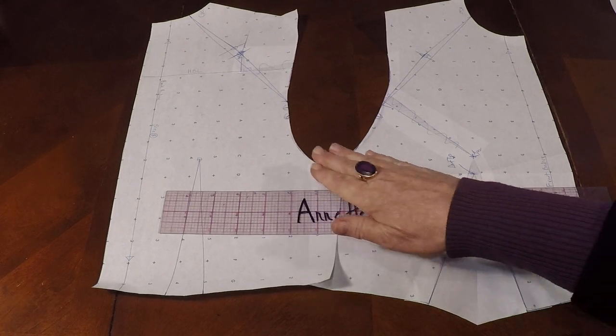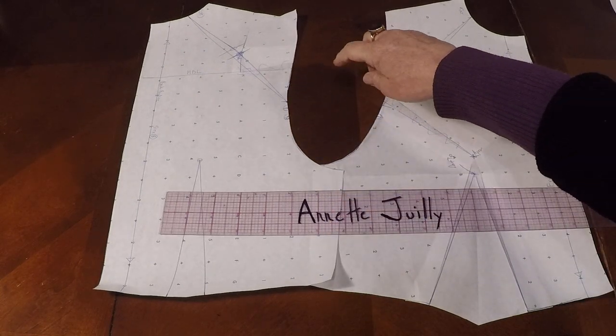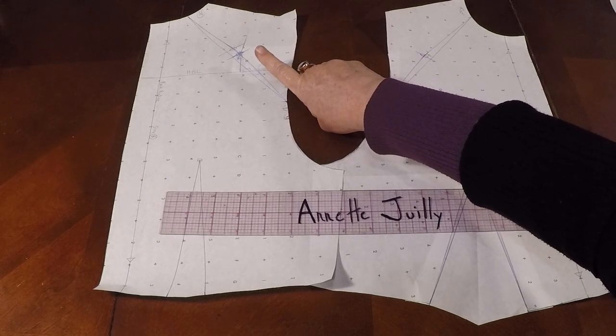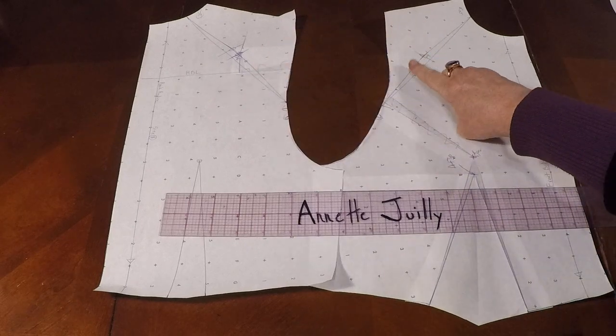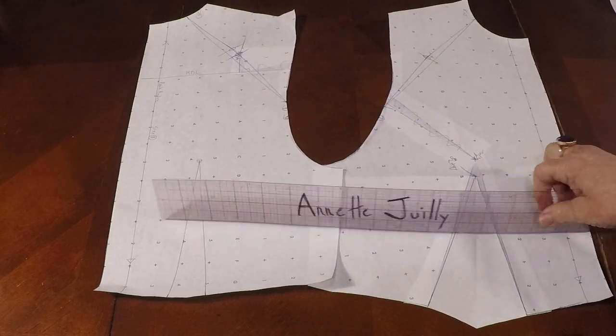My prior videos where we dropped the armhole, we added fullness into the armhole in front and back, got rid of the shoulder dart, and we added the raglan sleeve seam on front and back bodice, so need to check all those videos out.